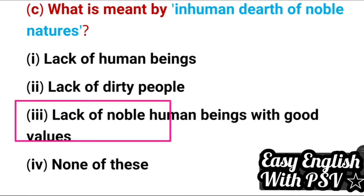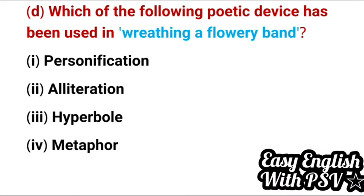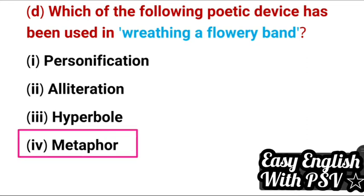Question 4: Which poetic device has been used in 'wreathing a flowery band'? Options: metaphor, personification, alliteration, hyperbole. Correct answer: metaphor. 'Wreathing a flowery band' is a metaphor.